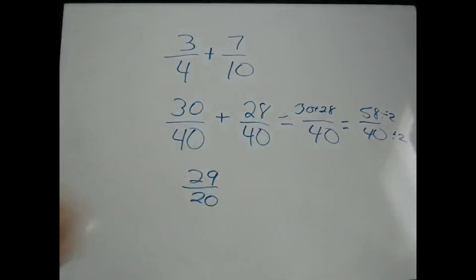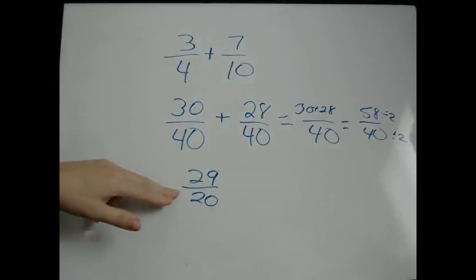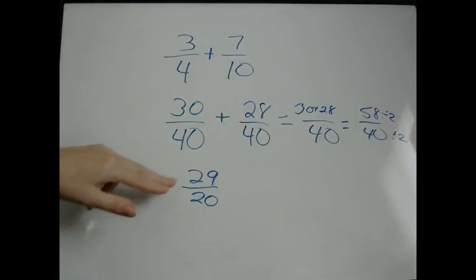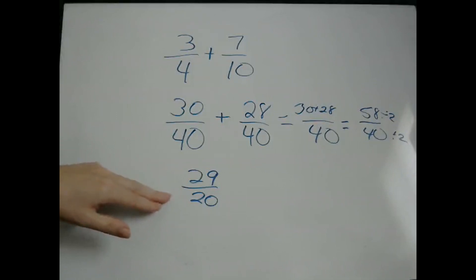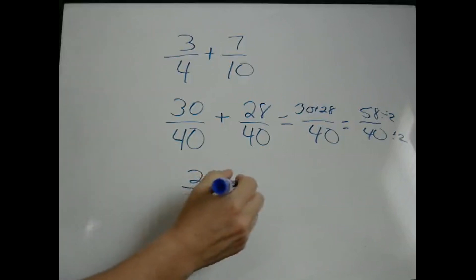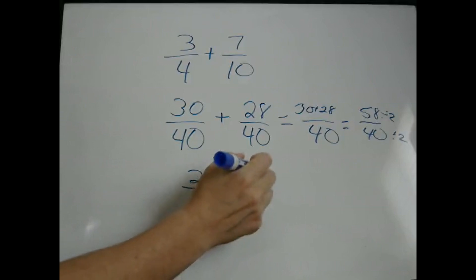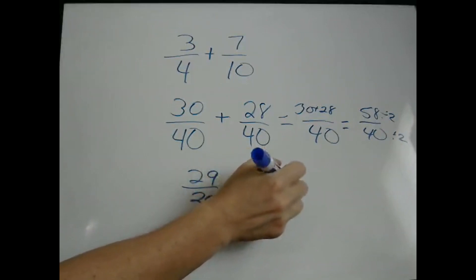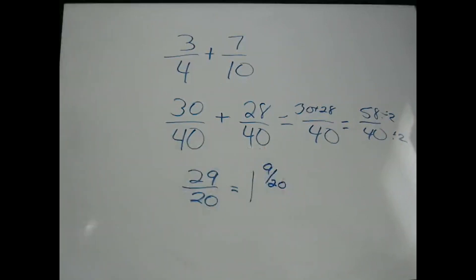This is now in lowest terms, but your answer might be an improper fraction — in fact, this is an improper fraction. It might need to be expressed as a mixed number. If you don't know how to make this into a mixed number, you need to watch the video about improper fractions and mixed numbers. So we'll make this into a mixed number of 1 and 9 twentieths.